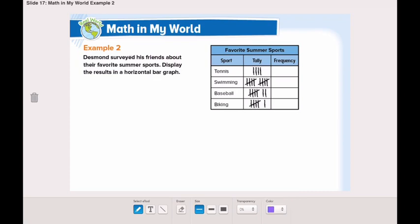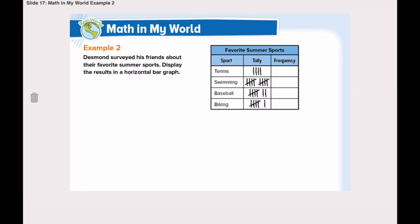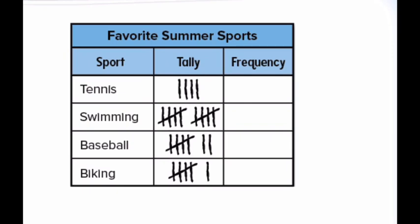Now turn the page to example number 2. Dimon surveyed his friends about their favorite summer sports and we need to display the results in a horizontal bar graph. In a horizontal bar graph the bars go from left to right, not from down to up like the vertical. This tally chart shows us the data collected.